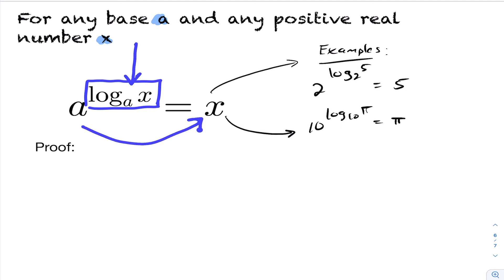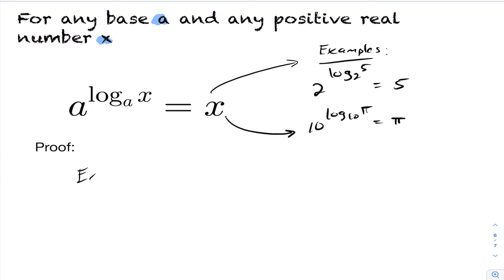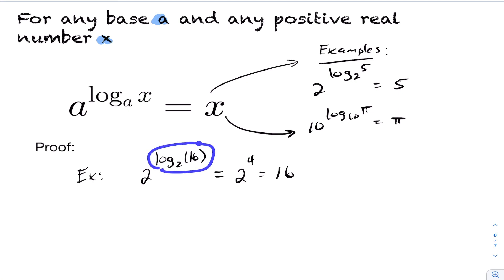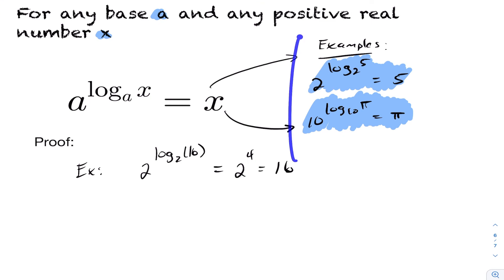We can see this with an example: two to the power of log base two of sixteen equals sixteen, because log base two of sixteen is four, and two to the fourth is indeed sixteen. We can combine all four properties — the product rule, power rule, quotient rule, and this fourth property — to simplify logarithms. That concludes today's lesson on logarithmic properties.